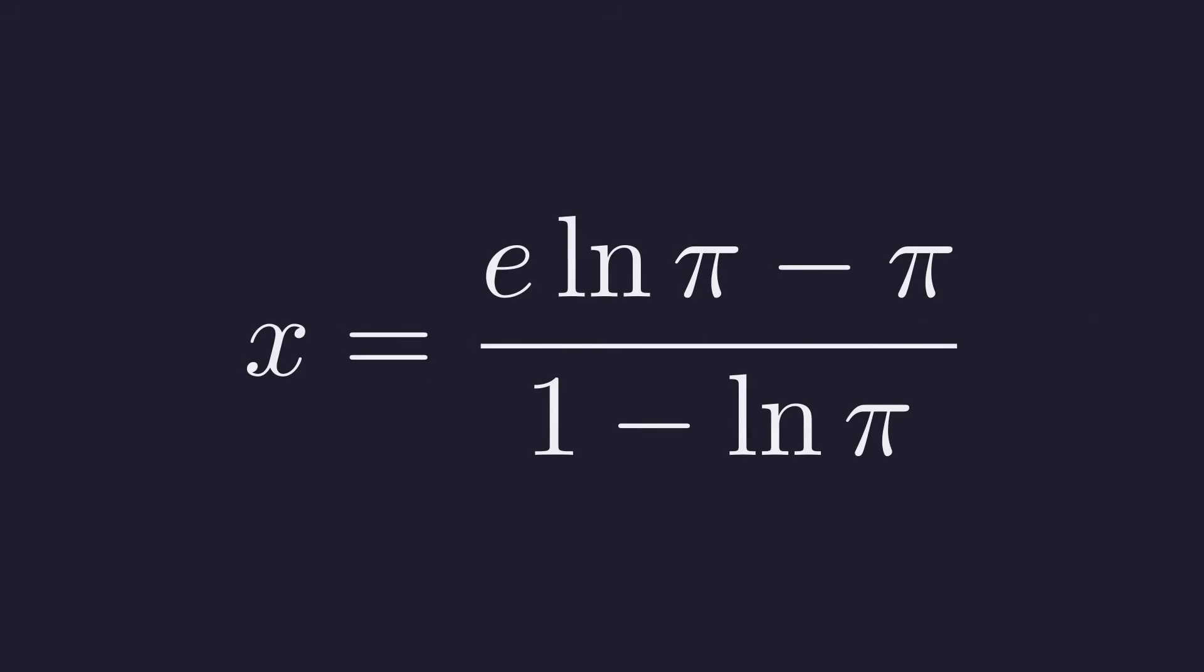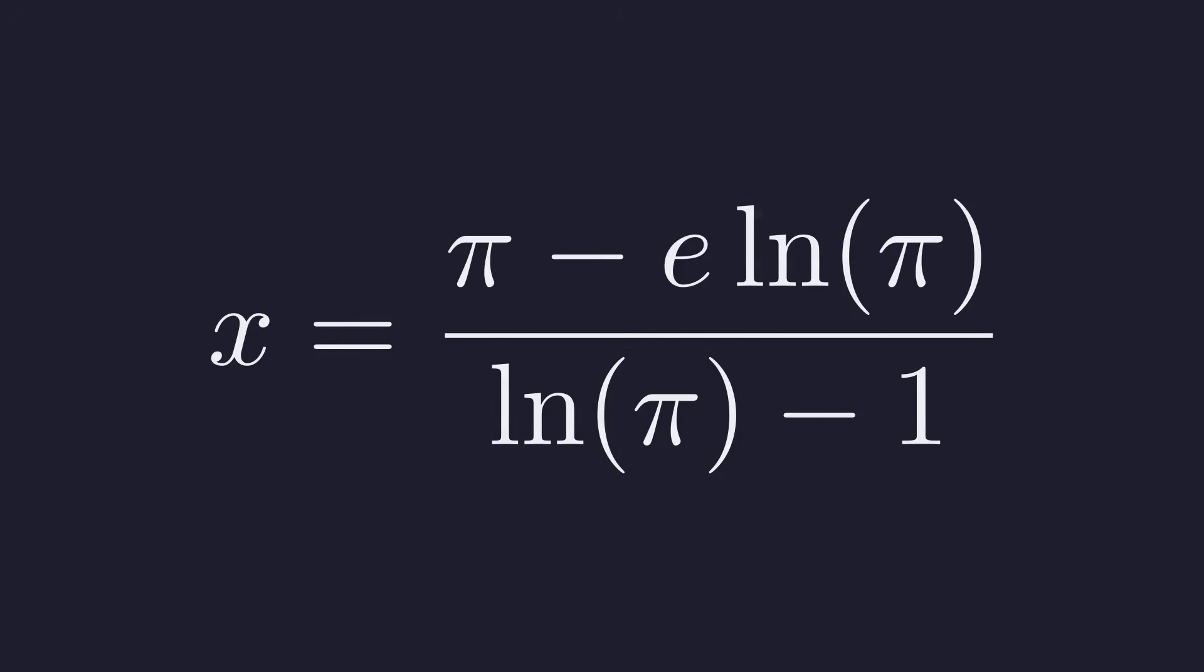This form is completely correct, but we can make it look a bit nicer. Notice that the denominator is negative. By multiplying both the numerator and the denominator by negative 1, we can write an equivalent fraction with a positive denominator. This gives us a cleaner form for our unique solution.